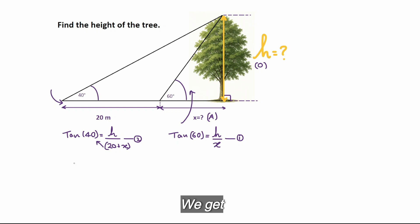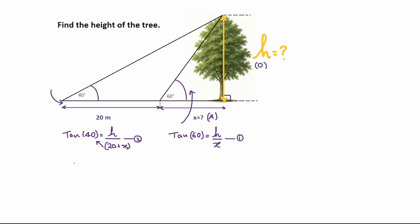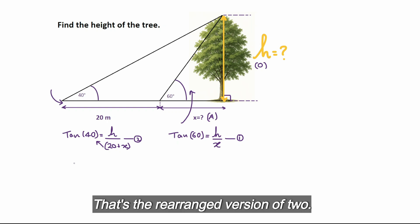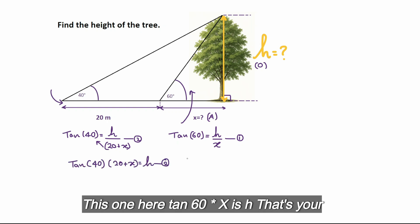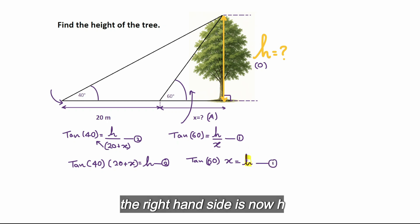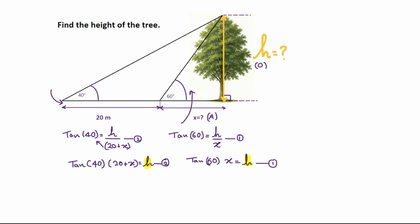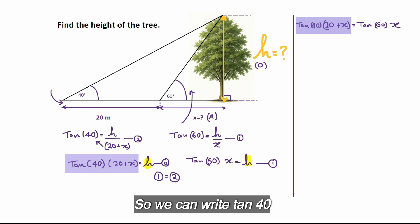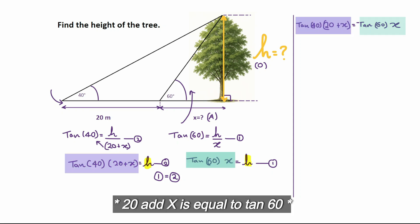The quickest way to simplify this is probably just moving terms across. We get tan 40 multiplied by (20 + x) equals h — that's the rearranged version of equation 2. And tan 60 multiplied by x equals h — that's the rearranged version of equation 1. You can clearly see that for both of them the right-hand side is now h, so obviously equation 1 is equal to equation 2.